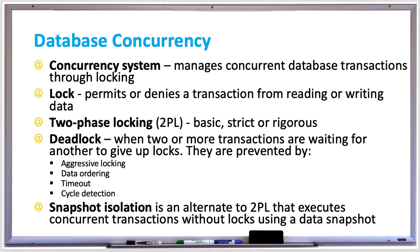Snapshot isolation is a popular alternative to two-phase locking. It's an optimistic technique that executes concurrent transactions without locks by creating a snapshot of the data, so transactions never wait but may sometimes restart if conflicts are detected. It works by making a private copy of the data read or written, writing updates to private copies, determining if there are any conflicts, and then either writing updates to the database or rolling back the transaction. There's also serializable snapshot isolation, which ensures serializable schedules when the isolation level is set to serializable.